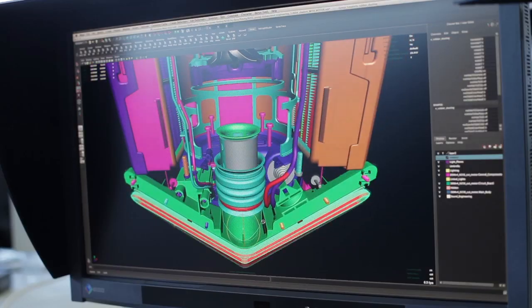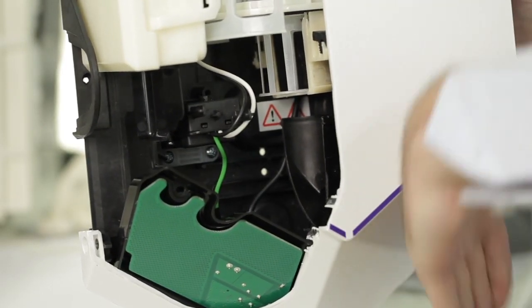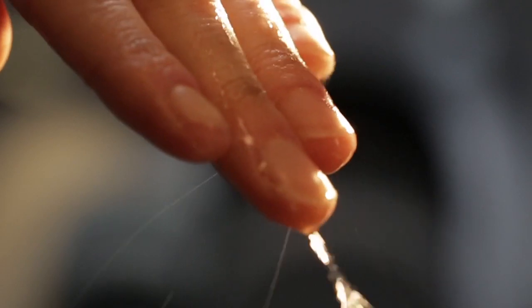This distributes the air evenly at high pressure before it exits out the slot at 400mph to literally scrape the water from your hands.